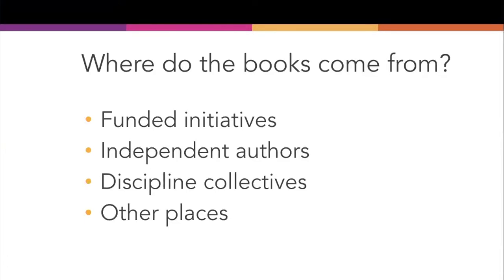So where do these open textbooks come from? They come from a variety of places, including funded initiatives — there may be grant funding to support authors in writing and publishing an open textbook, and a lot of times those grants are within individual institutions. It may also be the case that an independent author without institutional support decides they want to write an open textbook and share it freely with an open license. It may come from a discipline collective — a scholarly society that decides to provide a resource for their discipline and work on it together.